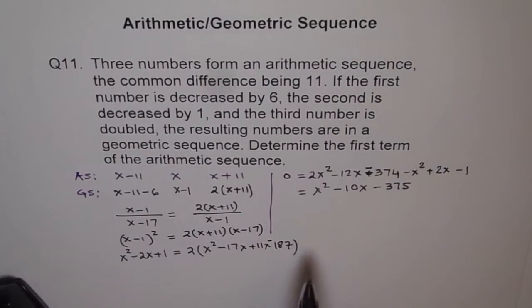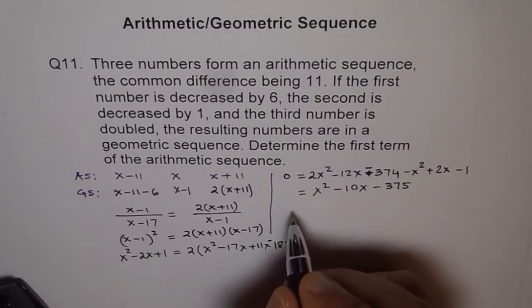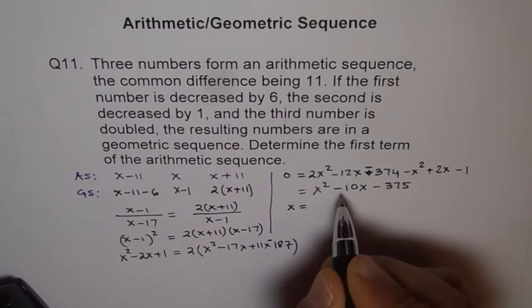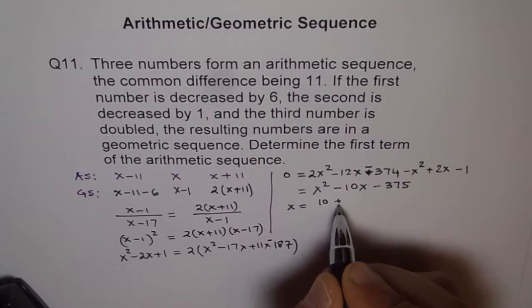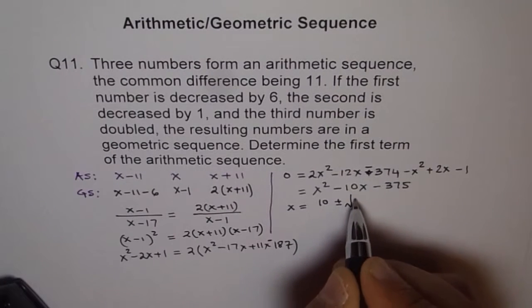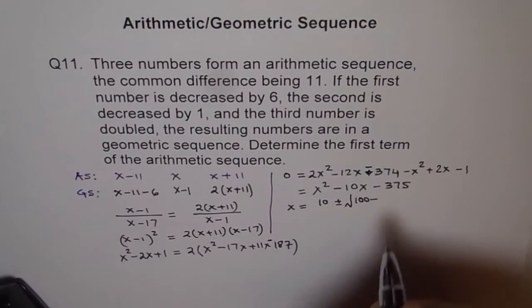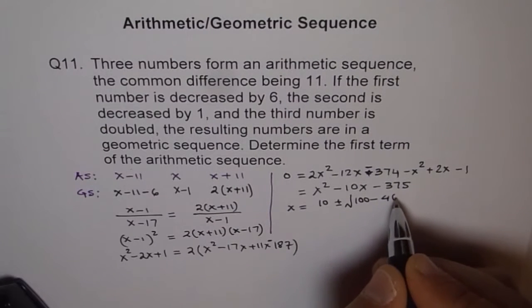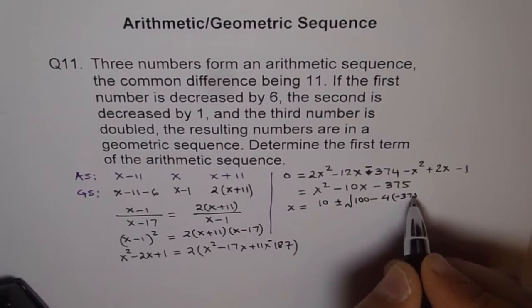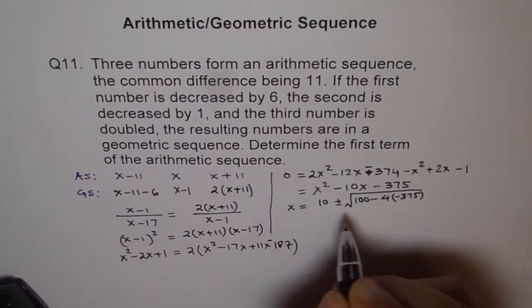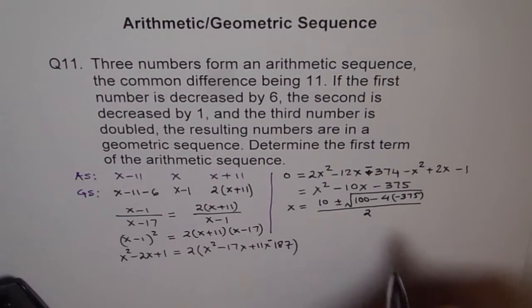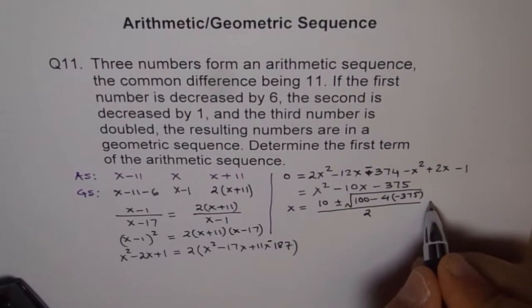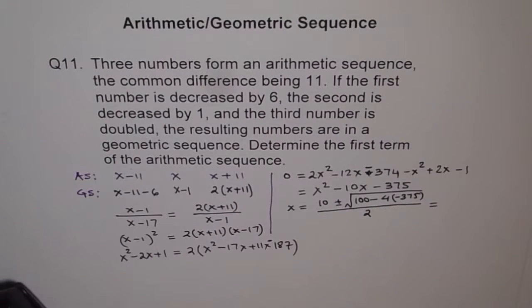Now from here, we can use the quadratic formula to calculate the value of x. So x is equal to minus b which is 10 plus minus square root of b square which is 100 minus 4 times a is 1 and c is minus 375 square root divided by 2 times a which is 2, correct? Now if we solve this, let's use the calculator to solve this.